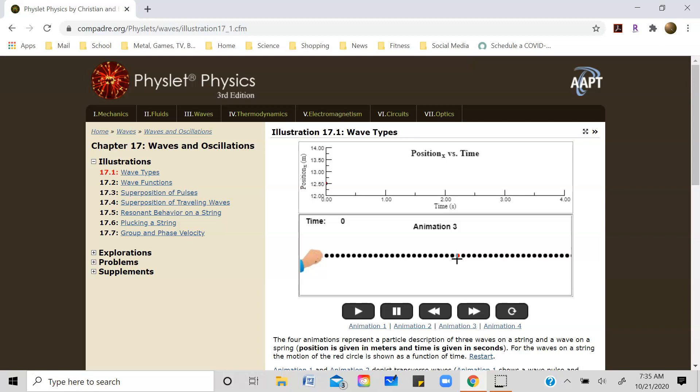Seeing the amplitude in the transverse pulse from earlier is pretty simple and obvious. However, seeing the amplitude of a longitudinal pulse is a little bit more difficult.